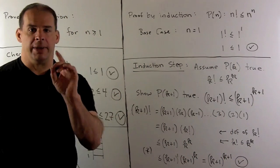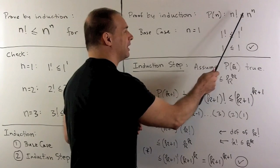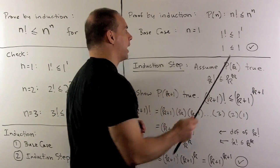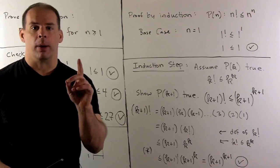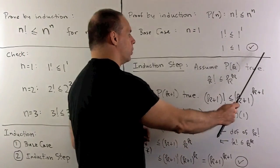Now, for our problem at hand, our statement P of n is just that n factorial less than or equal to n to the nth power. For our base case, we've already seen, we have 1 less than or equal to 1. So our base case holds.